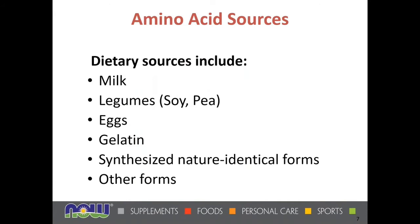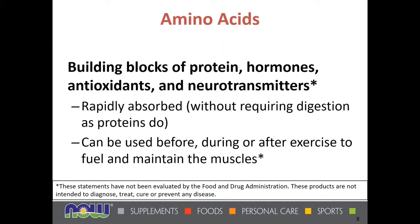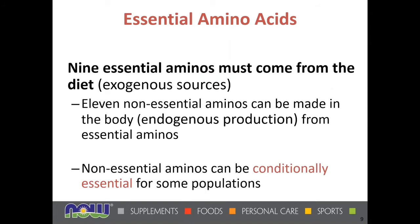Food sources include milk and milk byproducts like whey protein, legumes like soy and pea, eggs, gelatin, and synthesized nature-identical forms. Amino acids form the building blocks of protein, but also of hormones, antioxidants, and neurotransmitters. The word protein comes from the Greek word proteus, meaning of prime importance, reflecting the essential role of protein in the body. Amino acids are rapidly absorbed without requiring digestion as proteins do, and can be used before, during, or after exercise to fuel and maintain muscles.